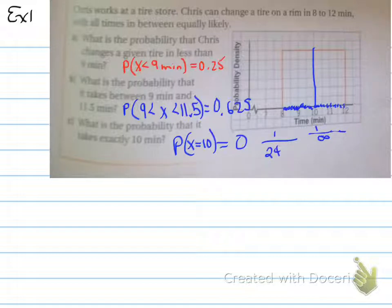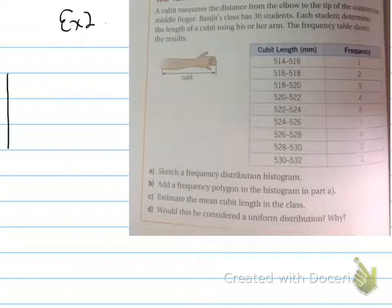Moving on. We're going to look at the next lesson. We have a cubit measure the distance from the elbow to the tip of the outstretched middle finger. Ranji's class has 30 students. Each student determines the length of a cubit of his or her arm. The frequency table shows the results.